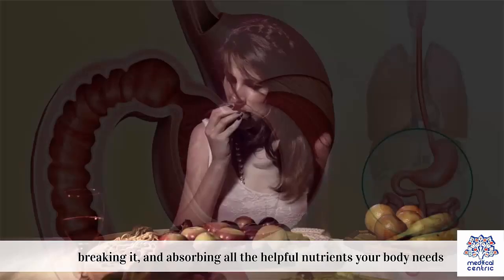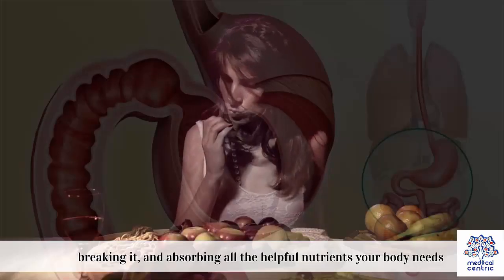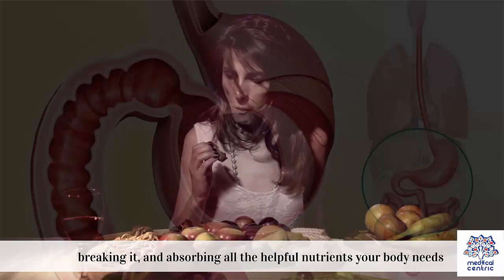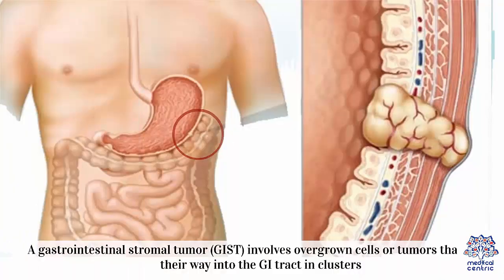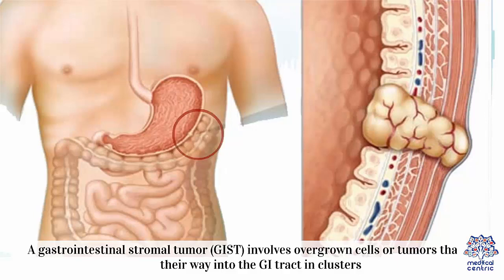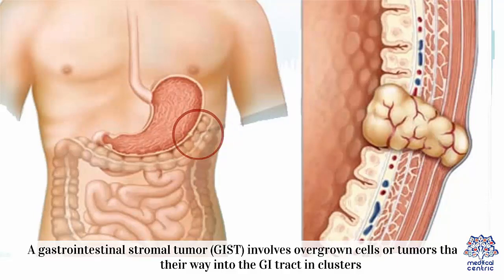breaking it down and absorbing all the helpful nutrients your body needs. A gastrointestinal stromal tumor, or GIST, involves overgrown cells or tumors that make their way into the GI tract in clusters.